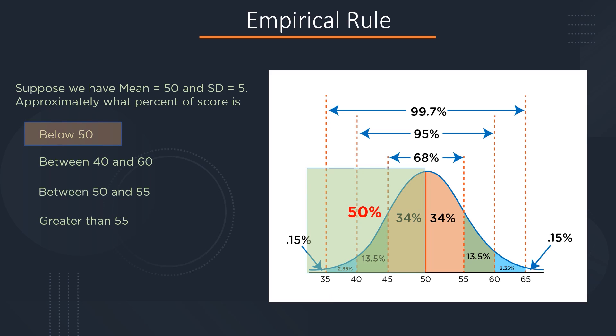Since 50 represents the mean value, all the values below 50 will cover 50% of the total data. The values 40 and 60 are within two standard deviations of the mean, which covers 95% of the total data. The values 50 and 55 represent exactly 34% of the total data, and greater than 55 represents 16% of the total data.